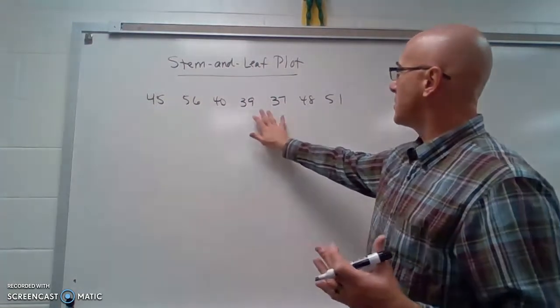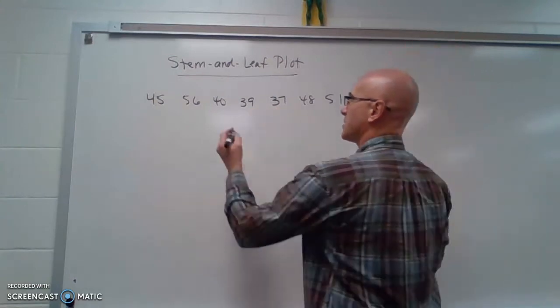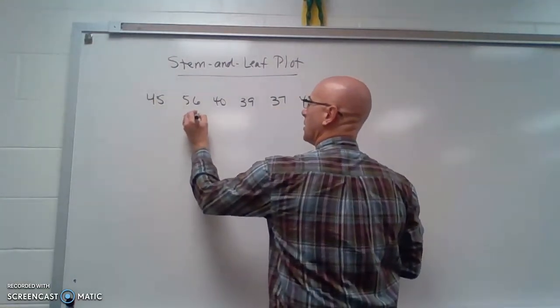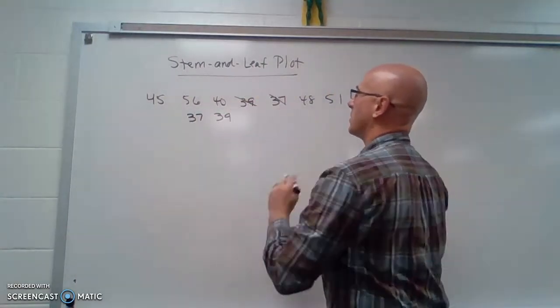So it looks like we have numbers in the 30s, 40s, and 50s. So here are two numbers in the 30s. Let's just first write them in order: 37 and 39. Okay so we're done with those two numbers.